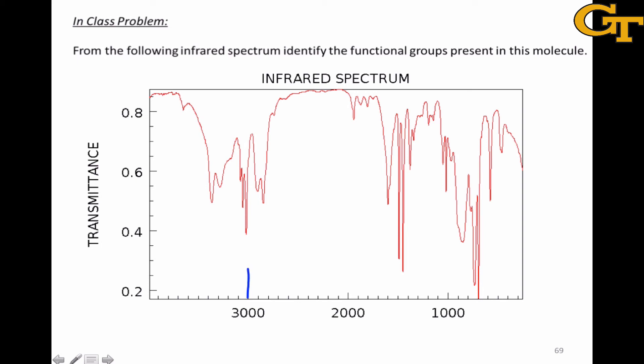In particular, we can notice that we see, in addition to some CH peaks that are north of 3000 indicating CSP2 or SPH stretches, we also see these two peaks farther out which seem to be indicative of an OH or an NH.